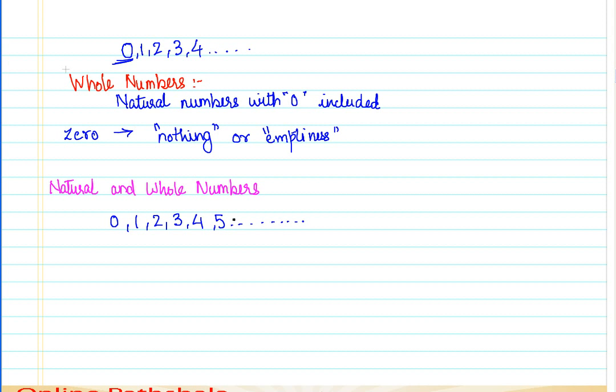If you recall the definition of natural numbers, natural numbers start from 1. So all the numbers starting from 1 and moving onwards are natural numbers. When I add 0 to the set of natural numbers, I have numbers that we call whole numbers.